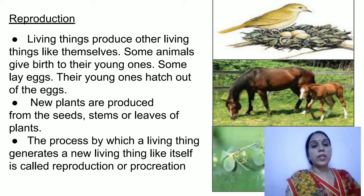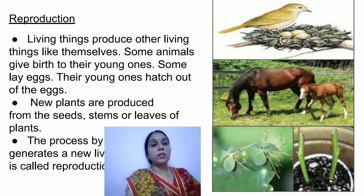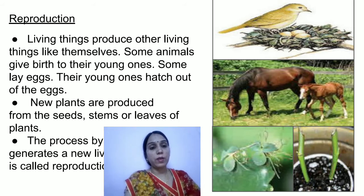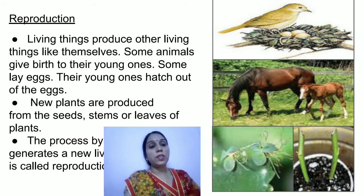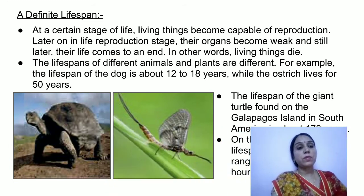The process by which a living thing generates a new living thing like itself is called reproduction or procreation. In the bryophyllum plant, a new small plantlet appears from the leaf itself, and from this leaf a new plant can be regenerated — this is a very unique plant. Rose plants can also be regenerated with the help of small twigs. These are some of the ways of reproduction in plants.